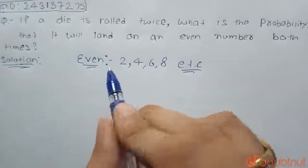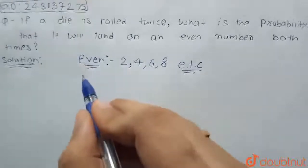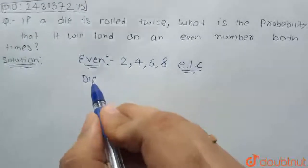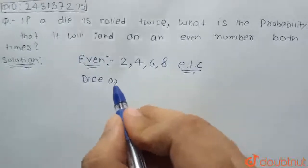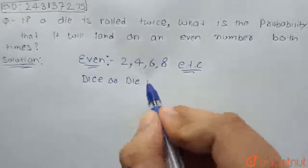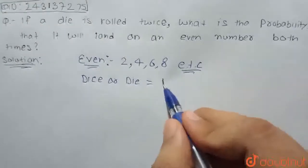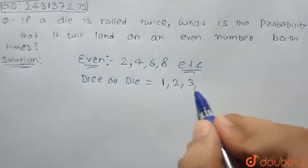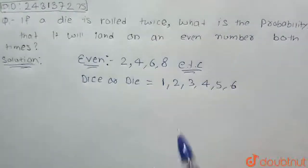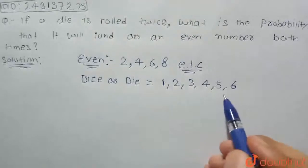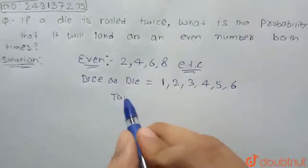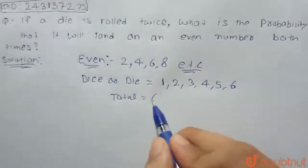And as we know, in a die, how many numbers or faces are in a die? That is 1, 2, 3, 4, 5 and 6. So the total number of outcomes is 6.